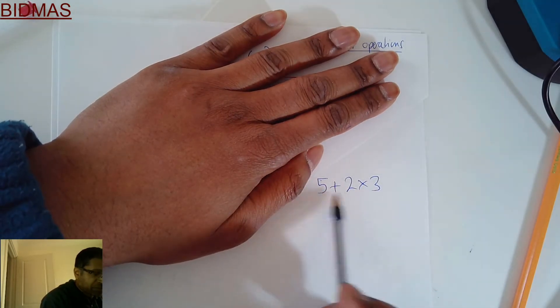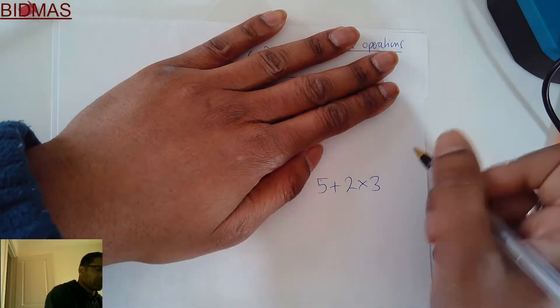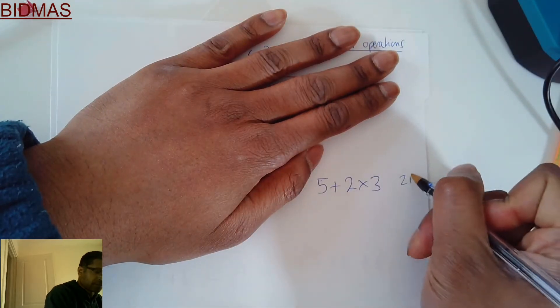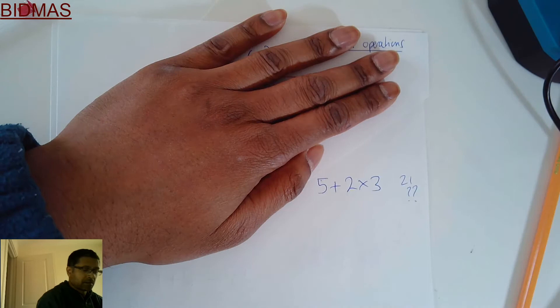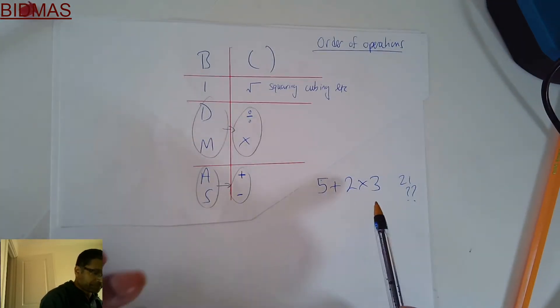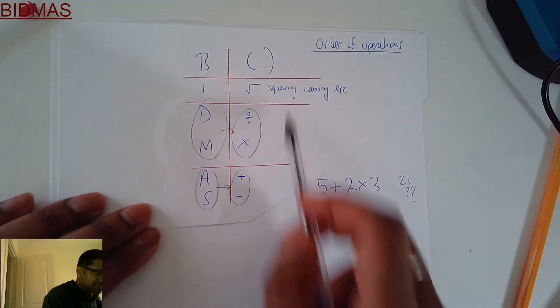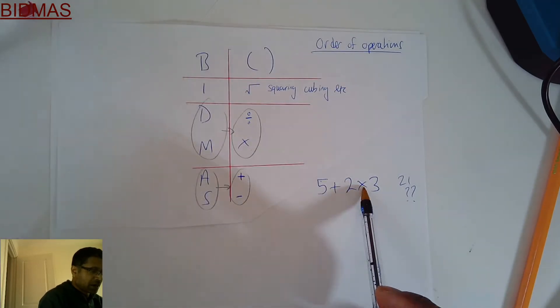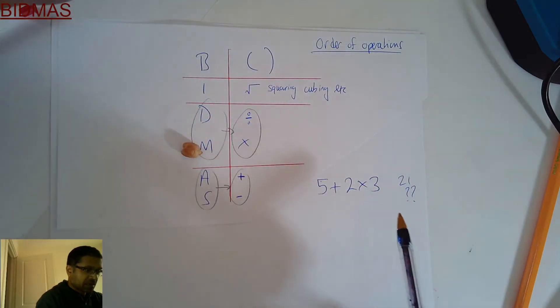I think most people would probably do 5+2=7, 7×3=21. Well, it's wrong. What you do is look at this thing here, at the chart. You've got a times-ing operator and you've got an adding operator.